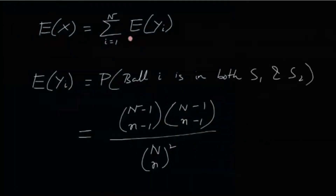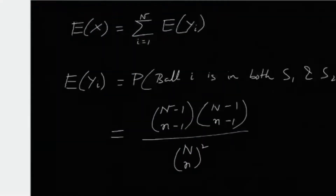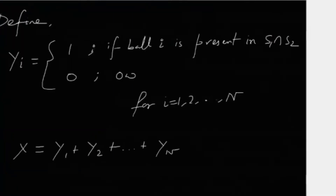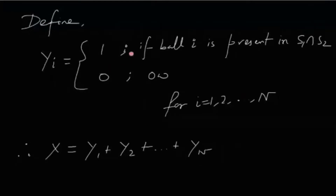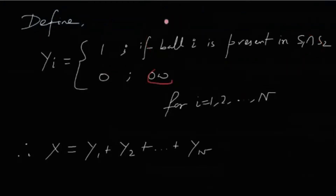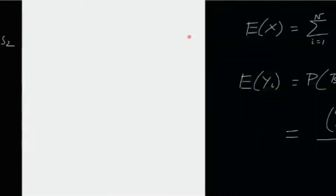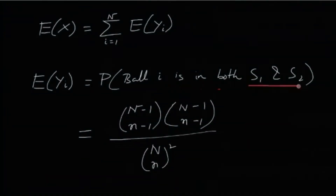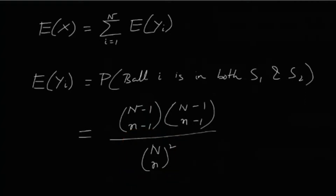E[Y_i] = P(ball i is present in both S1 and S2). The total number of sample pairs is (N choose n)². To count pairs where ball i is in both samples: fix ball i in both S1 and S2, then choose the remaining n−1 elements of S1 from the remaining N−1 balls (N−1 choose n−1 ways), and similarly for S2. This is not about exactly one ball in common — other balls may also be common. We only require that ball i is in both samples.